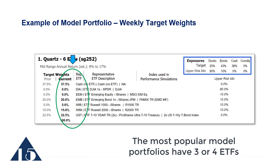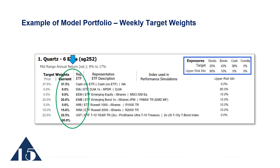The report comes out usually on Wednesday, and these target weights need to be implemented the following Friday. In each of the weekly publications there are 6 to 7 model portfolios. Generally speaking, you would select a particular model portfolio and stay with that model portfolio over time. Each model portfolio holds a specific set of ETFs, and the target weights for those ETFs change.